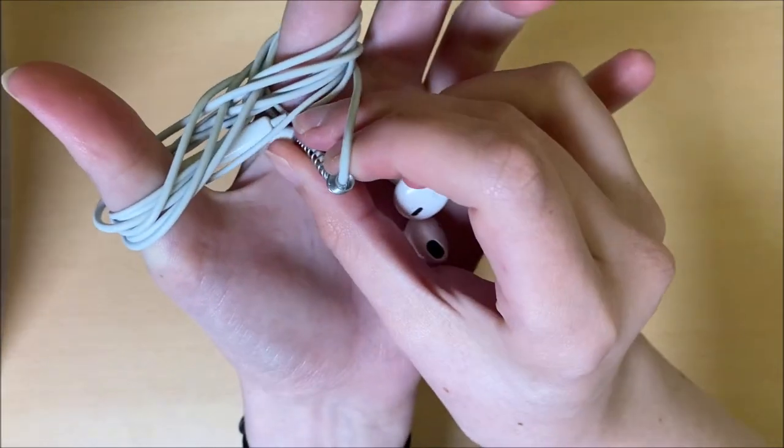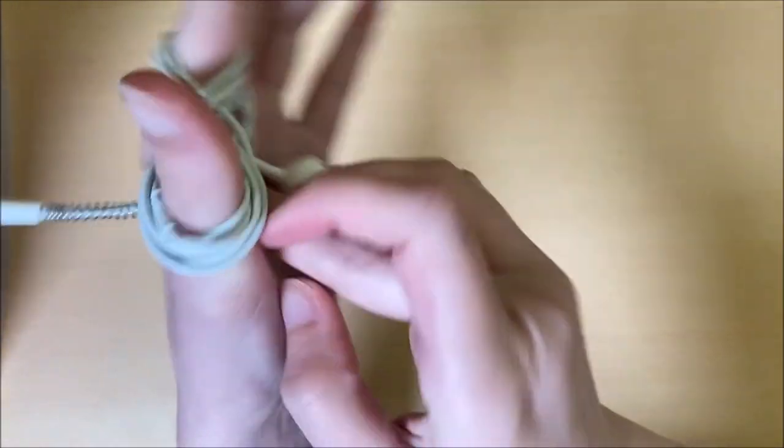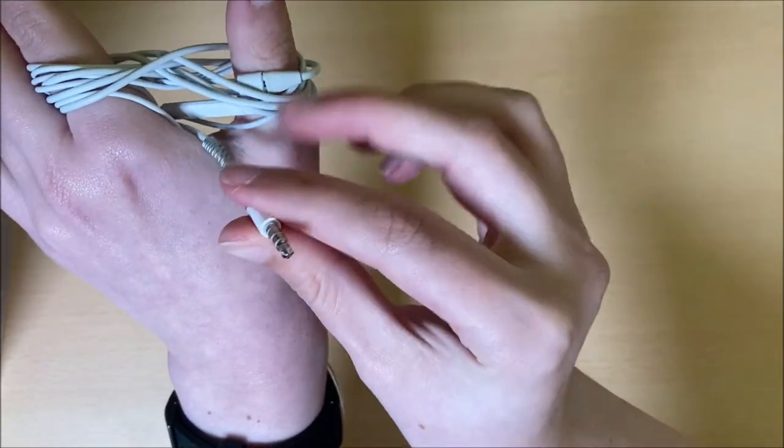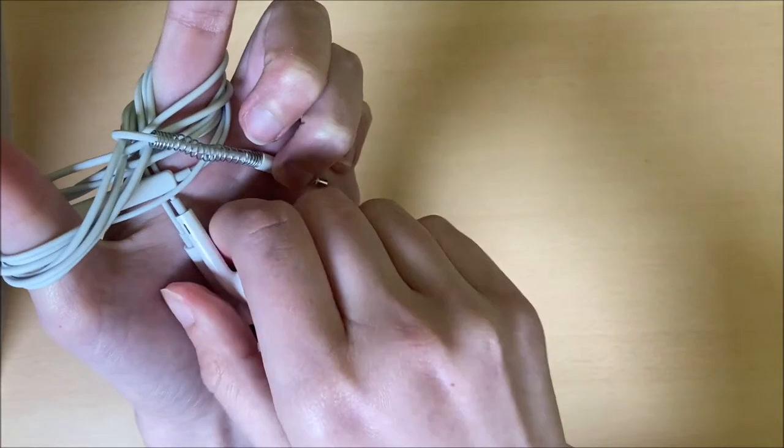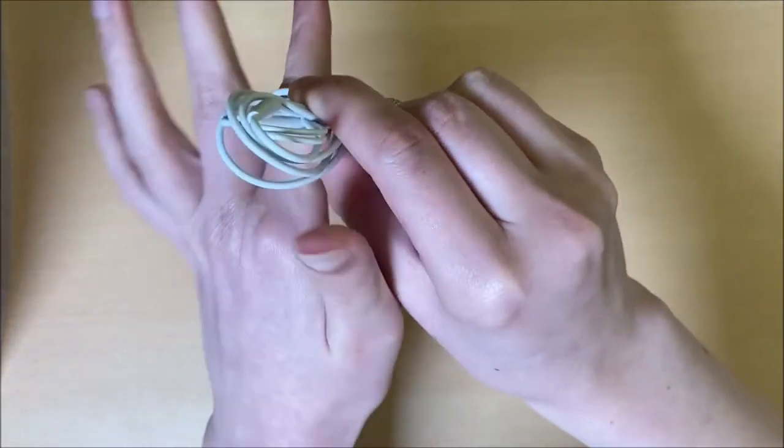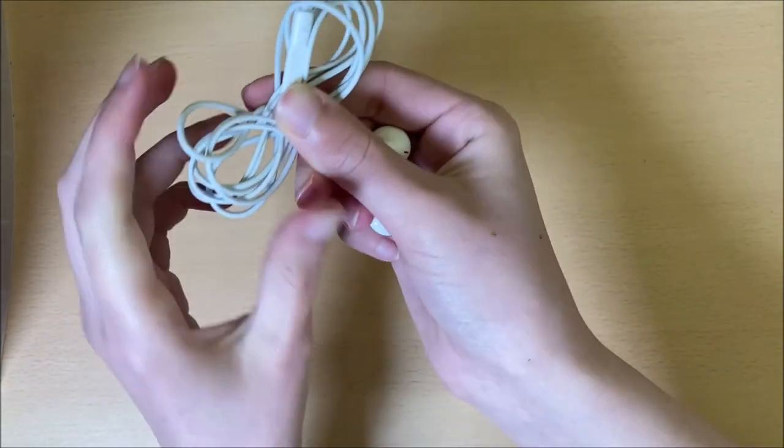Then you just need to wrap that once around the middle of your earphones and then pull off both loops from your fingers. Depending on how loose or tight you did this, it can be a bit of a struggle, but after a few times practicing, you will get it spot on.